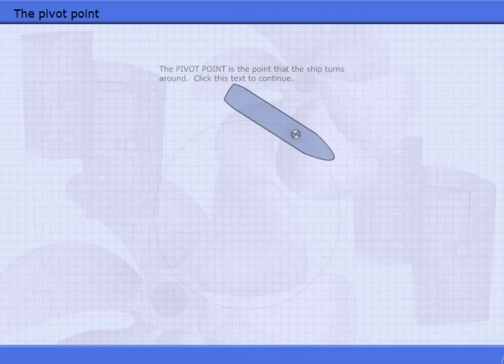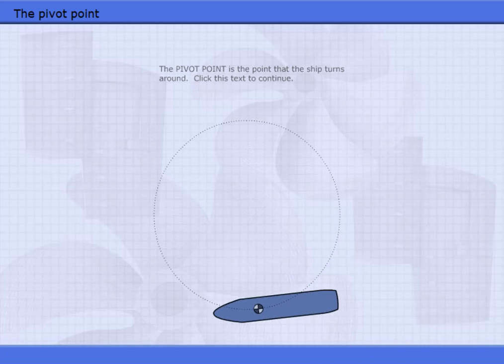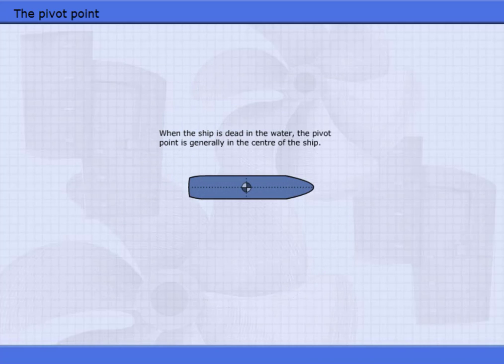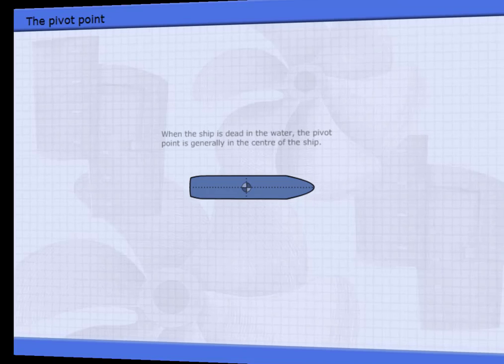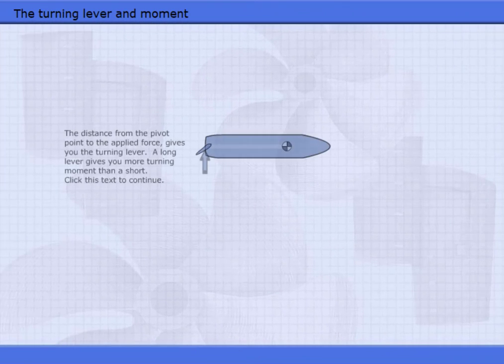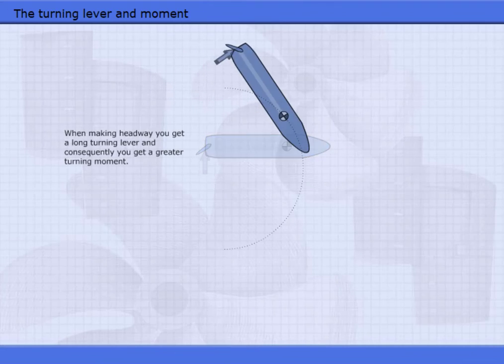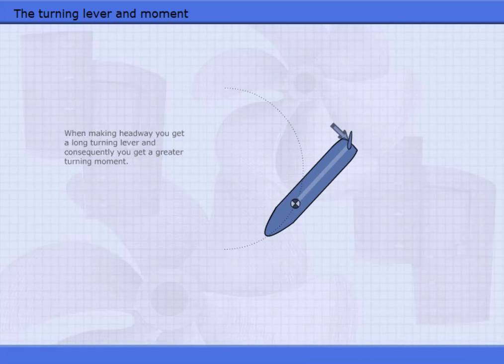The pivot point is the point that the ship turns around. When the ship is dead in the water, the pivot point is generally in the center of the ship. The distance from the pivot point to the applied force gives you the turning lever. A long lever gives you more turning moment than a short. When making headway, you get a long turning lever, and consequently, you get a greater turning moment.